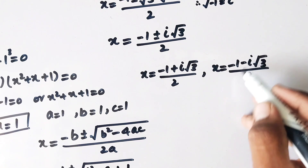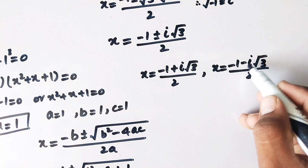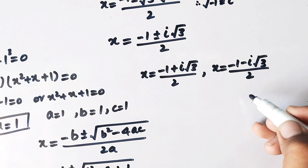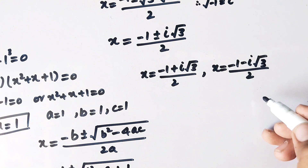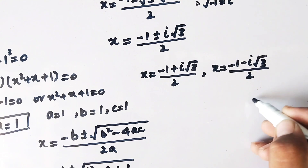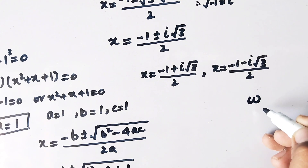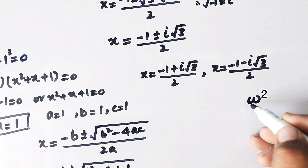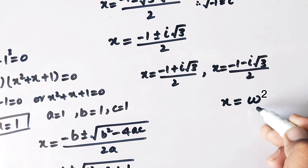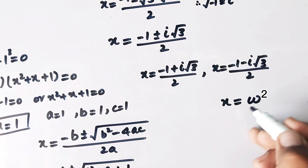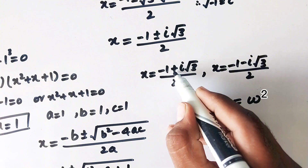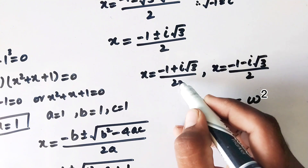The value minus 1 minus i times root of 3 over 2 is a complex cube root of unity equal to omega. So we write x equals omega squared. And the value minus 1 plus i times root of 3 over 2 is equal to omega, so x equals omega.